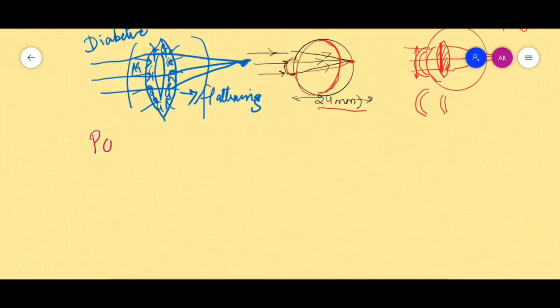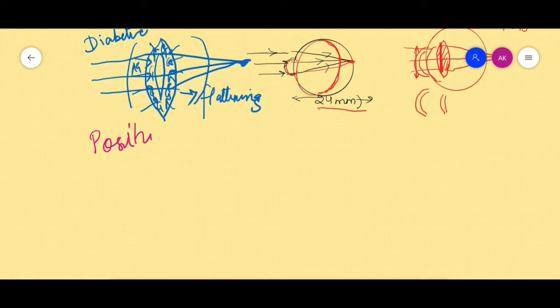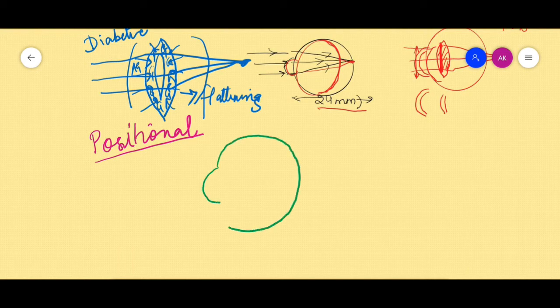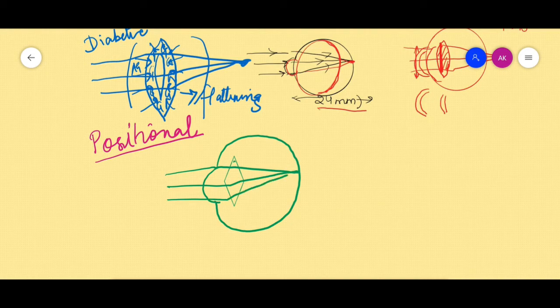positional hypermetropia. Let us see what is meant by this positional hypermetropia. Now we know that this is our normal eye in which this is the lens. Now in this eye the rays are getting focused on